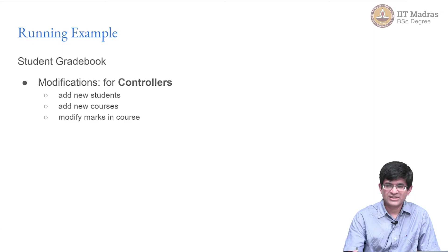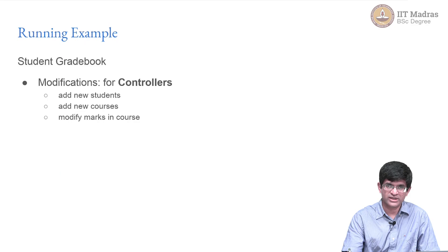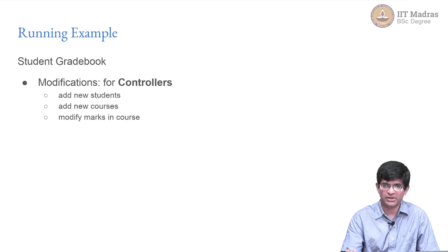Finally, as far as the controller — the last part of MVC — we will get to that much later. What we will be looking at is, for example, how do you add new students, add new courses, modify a course, modify a student's information, or enter the marks for a student in a course. All of those are examples of controller functionality that need to be implemented for this entire gradebook application to be useful.